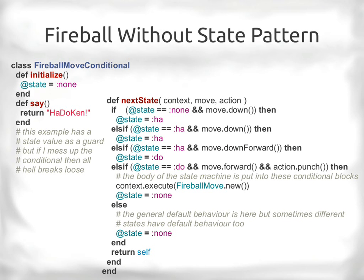Without the state pattern, the fireball ends up as one big block: if the state is none and we move down, go to state 'ha'; if in state 'ha' and crouching, stay; if you broke the sequence by pressing down again, you have to handle going back to 'ha'; in 'ha' with down-forward, go to 'do'; in 'do' with forward-punch, execute a fireball and reset. It makes sense, but it's big and complicated — you'd have more lines if you added animations.